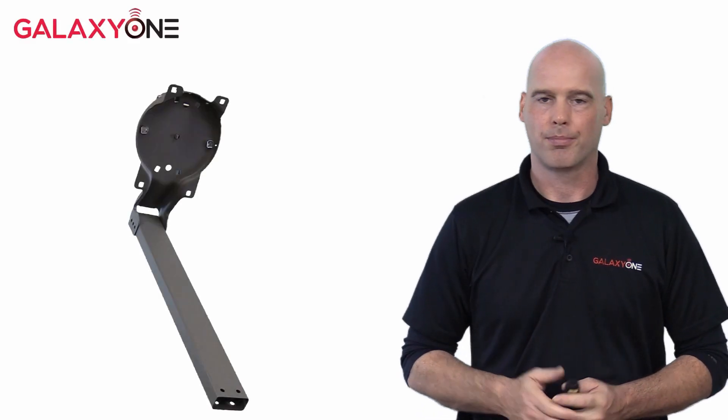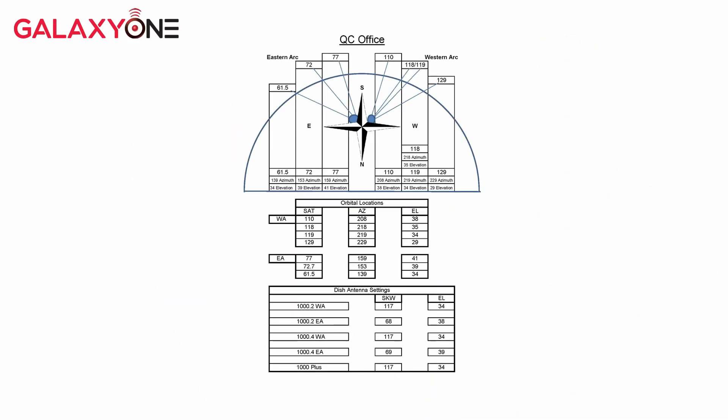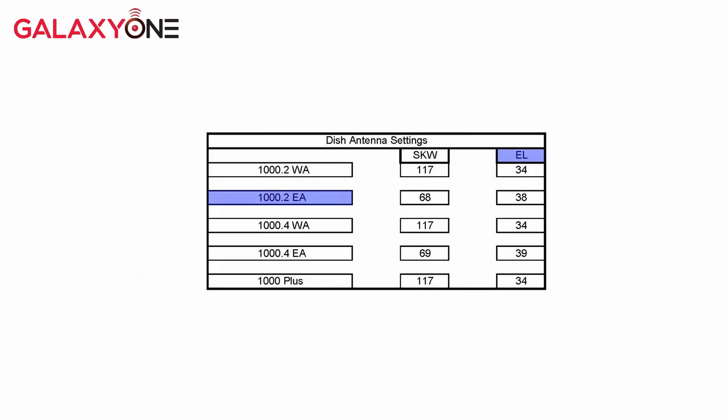Next, we will set the elevation. Back to the QC orbital location sheet. Locate the elevation settings for the 1000.2 Eastern Arc configuration. For the QC area, the elevation is set to 38 degrees.